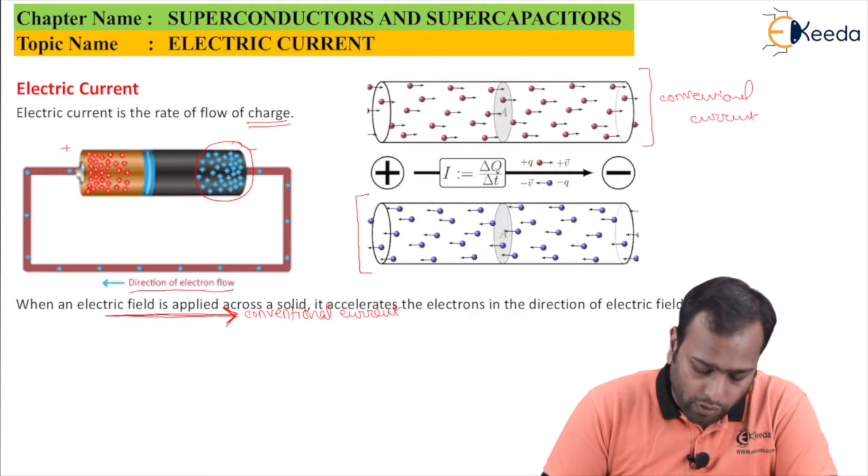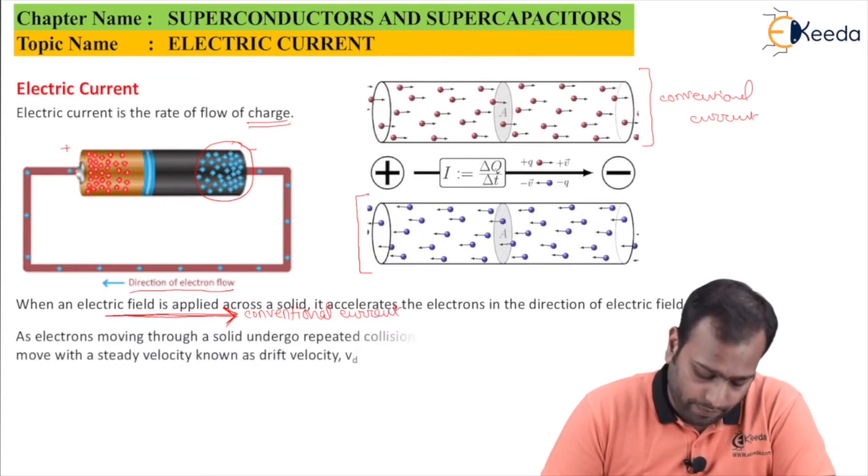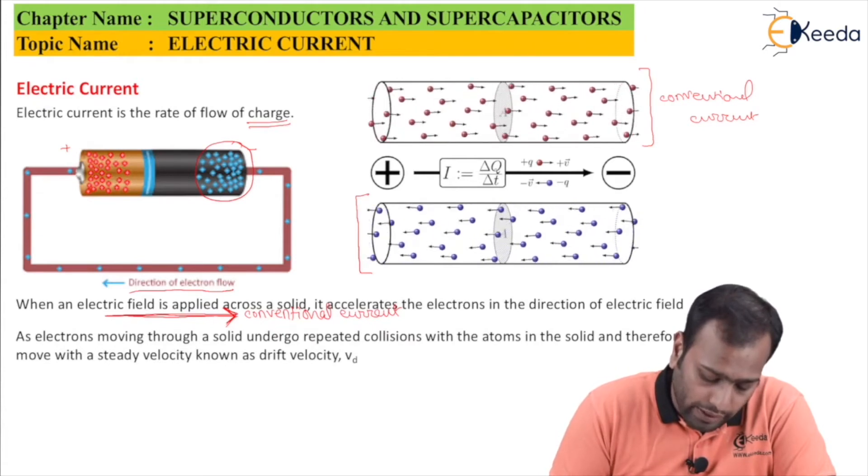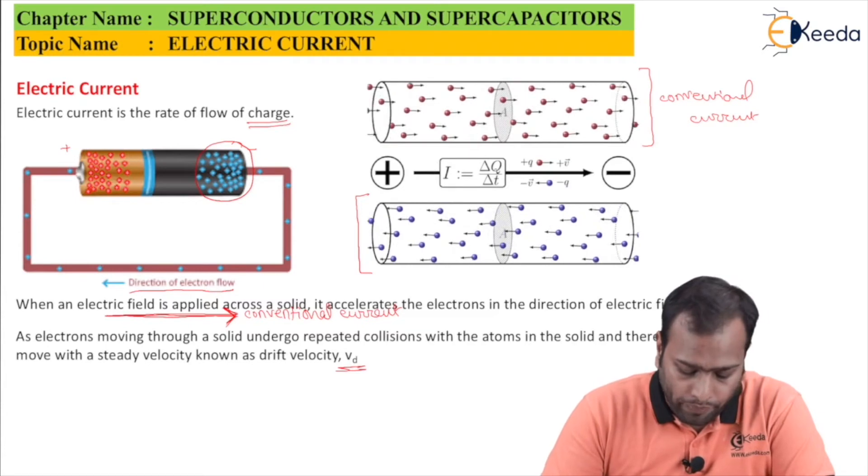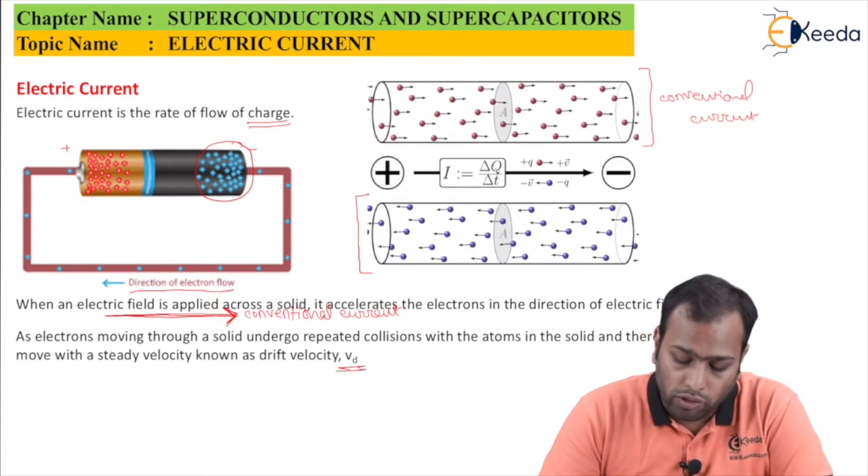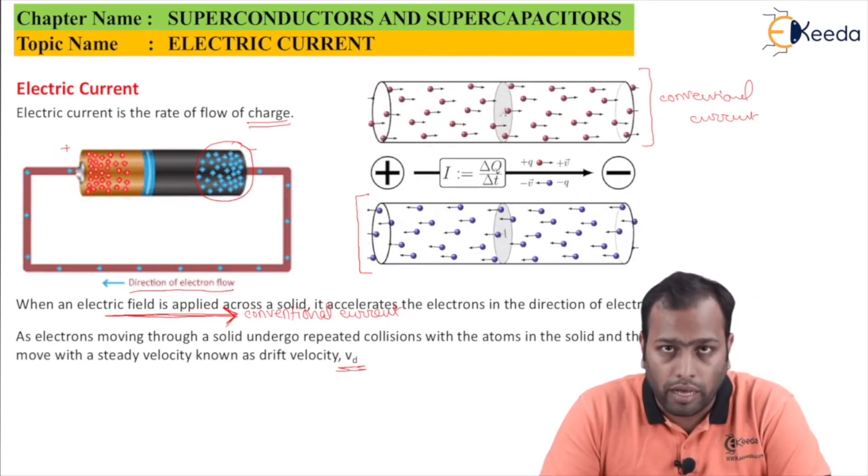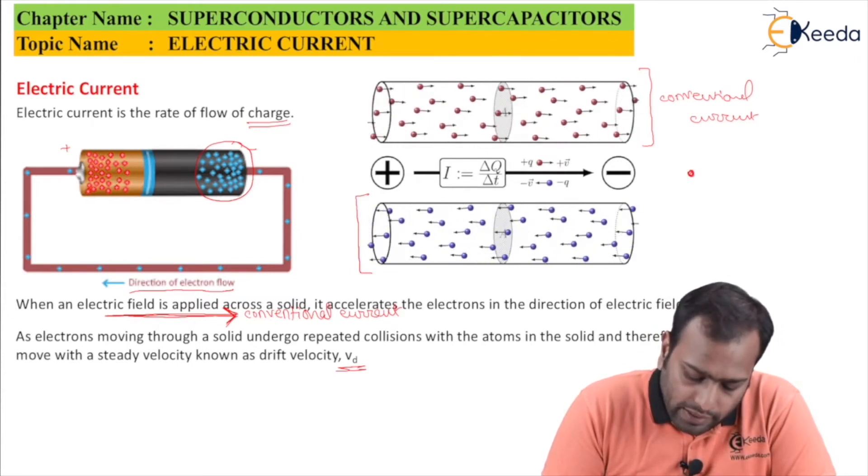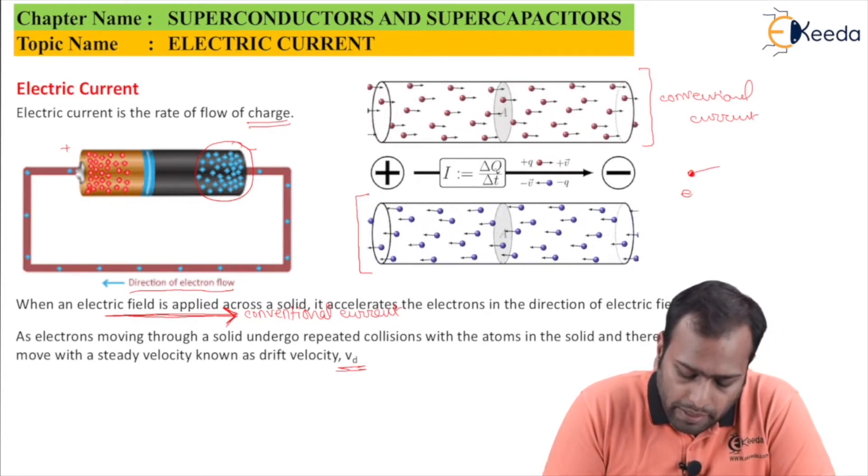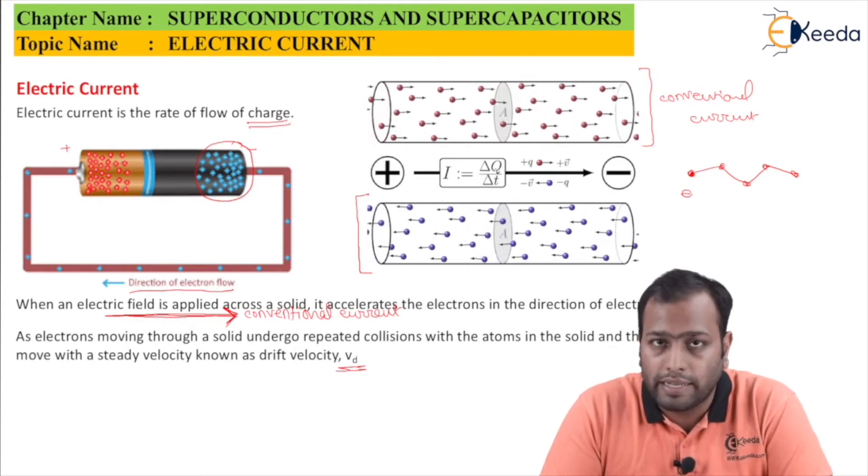When an electric field is applied across a solid, it accelerates the electrons in the direction of the electric field. As electrons moving through a solid undergo repeated collisions with the atoms in the solid, they move with a steady velocity known as drift velocity or Vd. This drift velocity is the average of all the collisions and all the drifting which an electron takes care while crossing the cross-sectional area. The electron goes under many collisions, and if you add all the velocities and take the average, you will get Vd, the drift velocity.